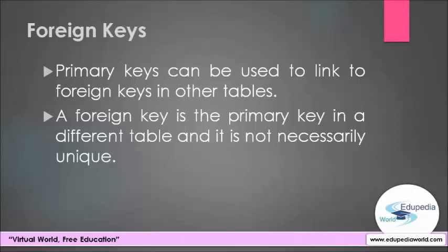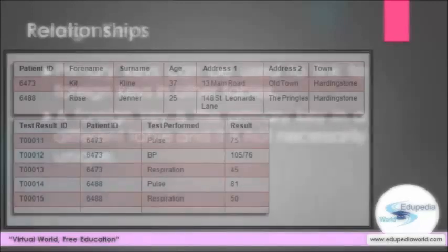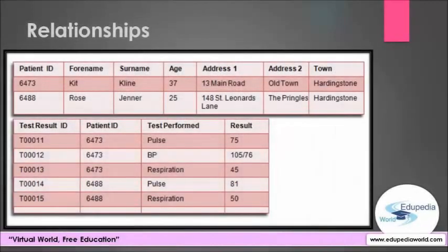So now we know the four most important basic concepts: tables, fields, primary keys, and foreign keys. We can now learn the relationships between tables. In order to create a relationship between two tables, a link is created using the key fields.